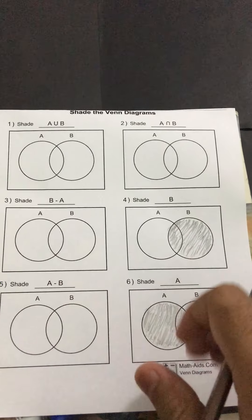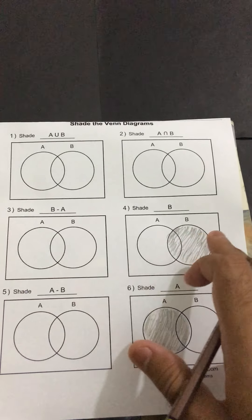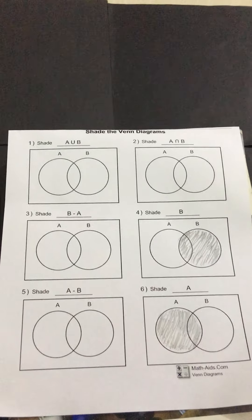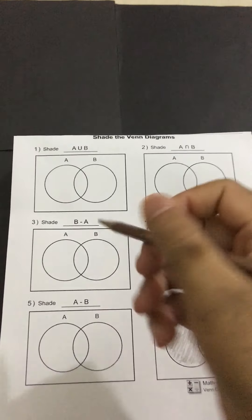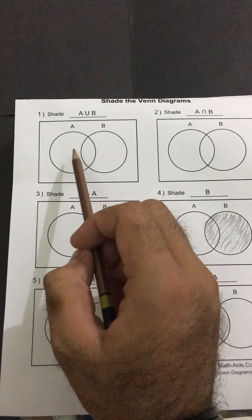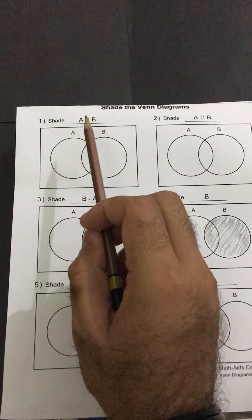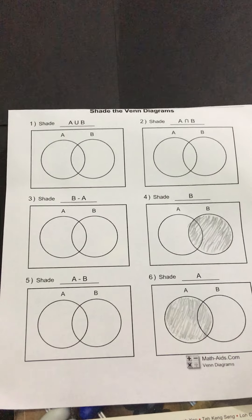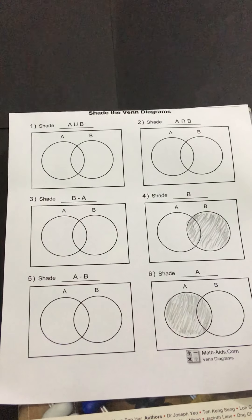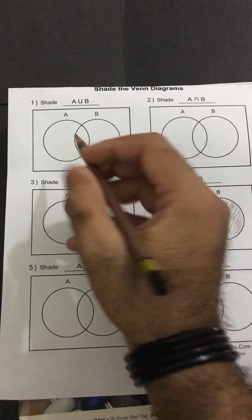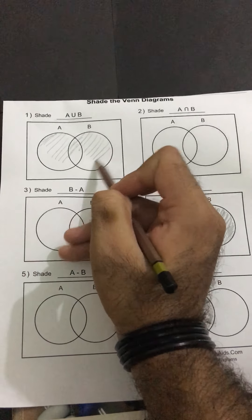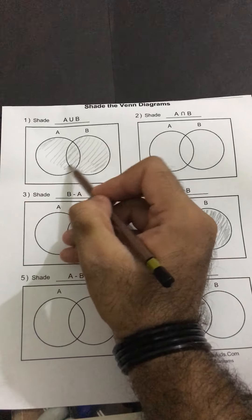These two questions were the simplest, so I started with them. In the fourth part I shaded set B, and in the sixth part I shaded set A. Now moving to the first question: I have to shade A union B. To shade A union B, let's revise what the union operator means — it tells us we have to combine both A and B, meaning we shade both A and B.